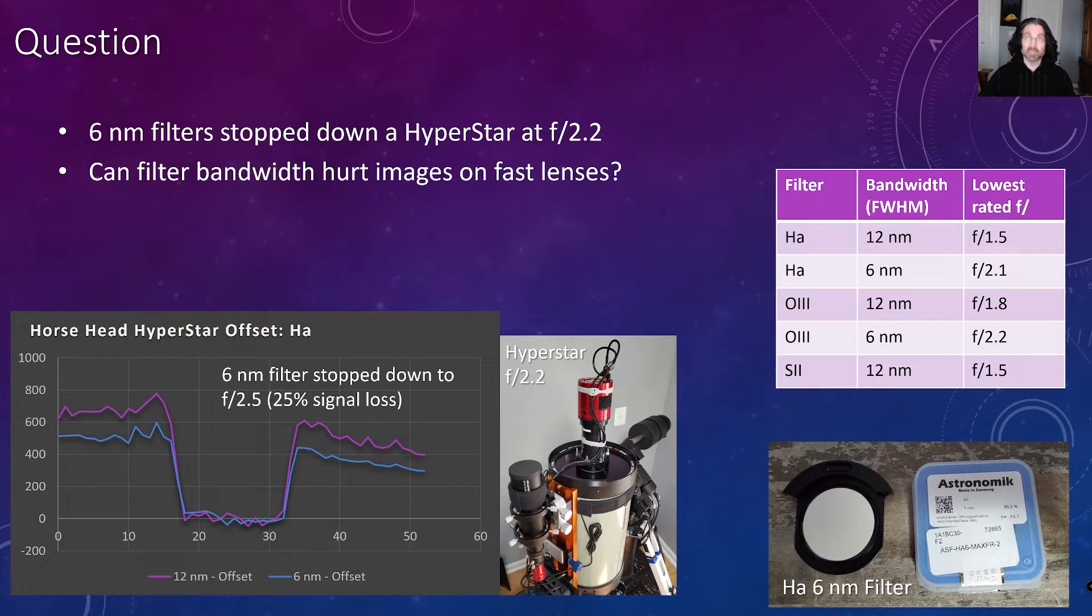In my previous video, with the link provided here, I used my Hyperstar to compare the signal that we get back from narrowband imaging with 6 and 12 nanometer bandwidth filters. I was surprised to learn that these 6 nanometer filters actually stopped down my Hyperstar so that instead of operating at f/2.2, it was more like it was operating at f/2.5.